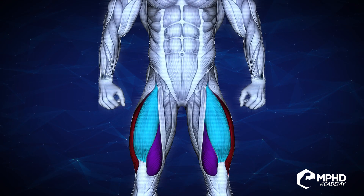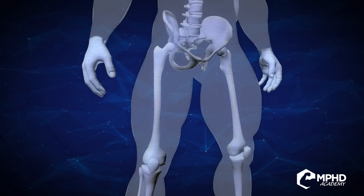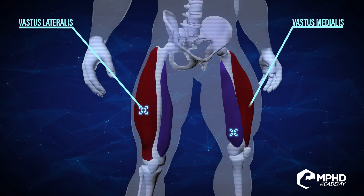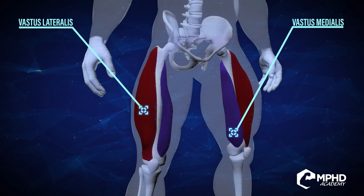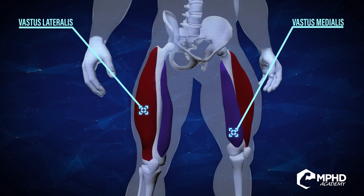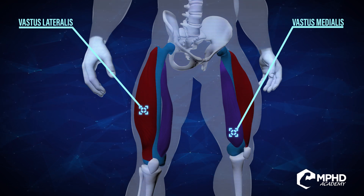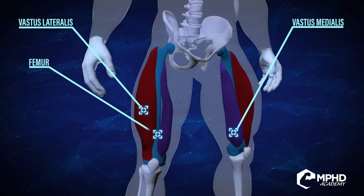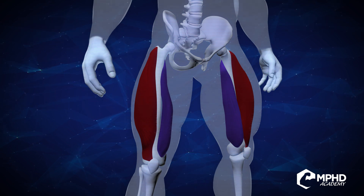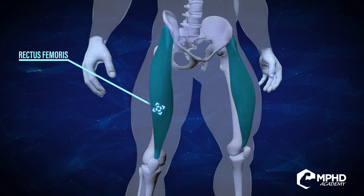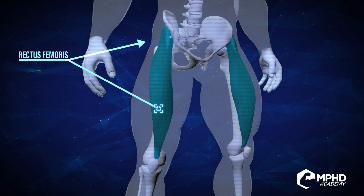Let's get more in depth into the quads anatomy. If you look at the vastus lateralis and medialis — the outer sweep and the teardrop — both of them originate on the upper thigh bone, the femur. The rectus femoris actually crosses the hip joint, so it originates on the hip.